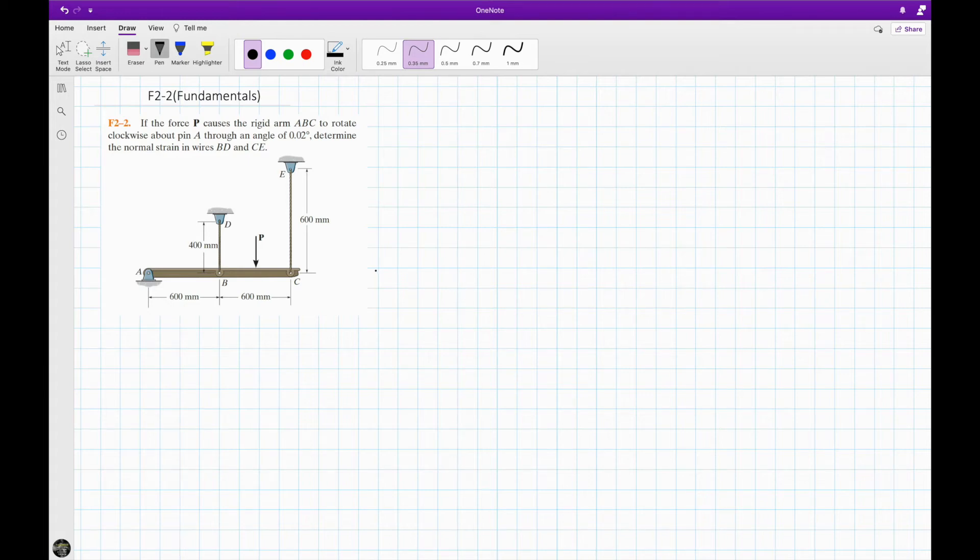In this video, we're going to focus on the second fundamental problem from chapter 2. If the force P causes the rigid arm ABC to rotate clockwise about pin A through an angle of 0.02 degrees, we are to determine the normal strain in the wires BD and CE.